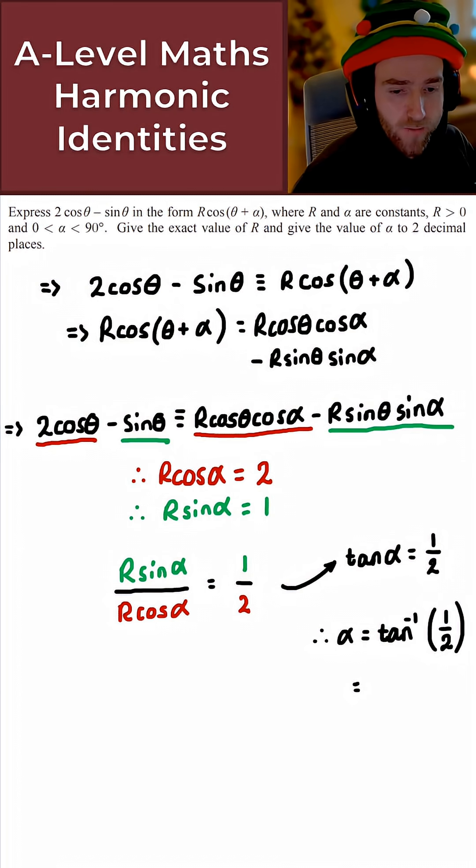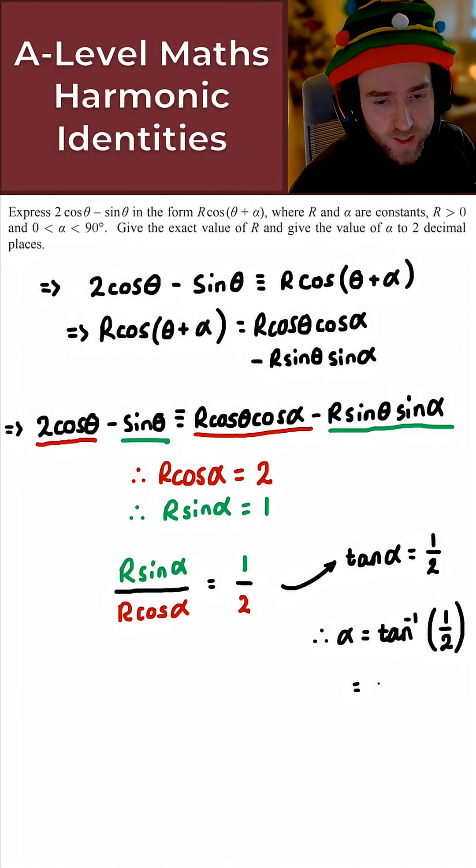And if we just want alpha here, we just take tan inverse of 1 over 2, which gives us 26.57 degrees. That's two decimal places. Perfect. So that's the value of alpha here.